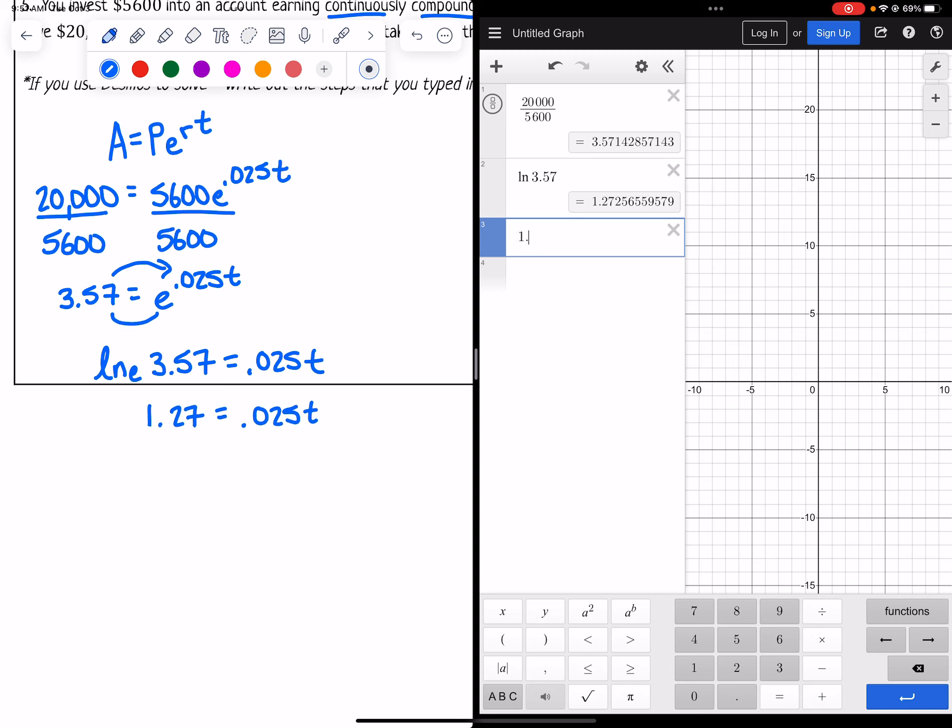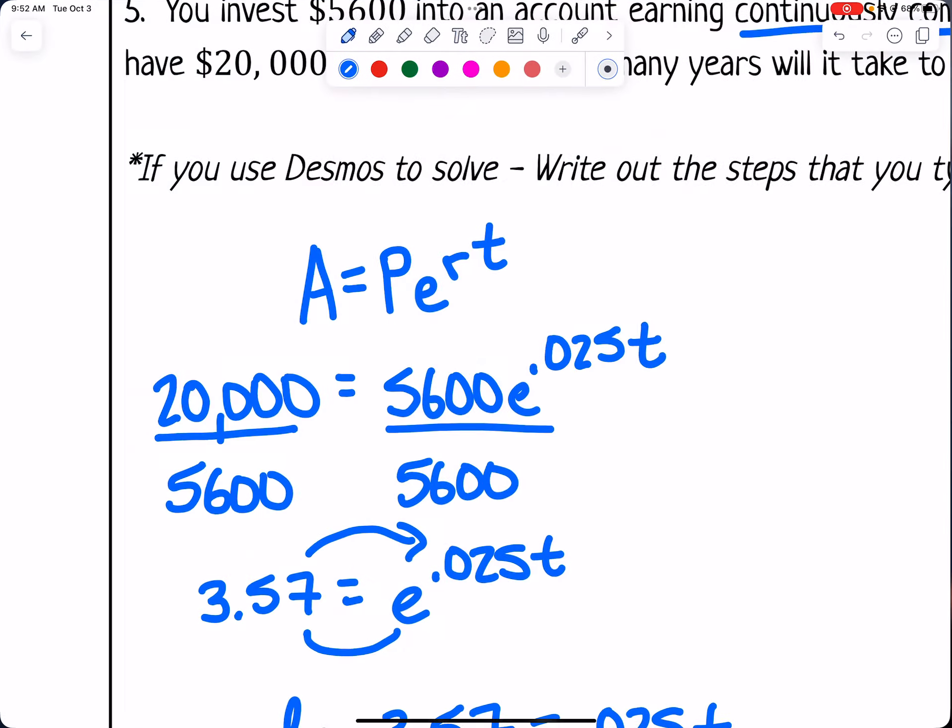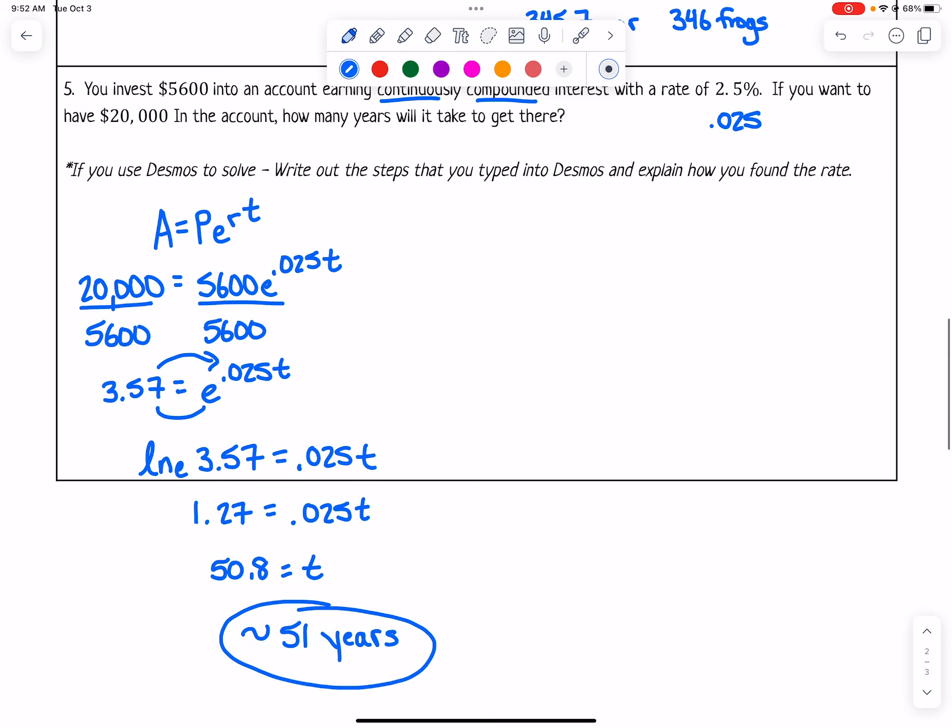And then that's equal to 0.025t. So I need to take the 1.27 and divide that by 0.025, and I get 50.8 would be t, or approximately 51 years would be a good answer for that one. So that would take a while. But that's it for practice quiz number 8 on log functions.